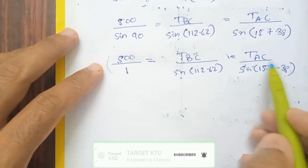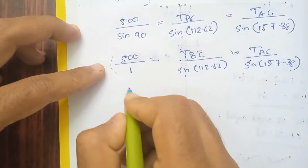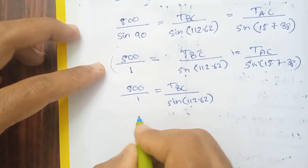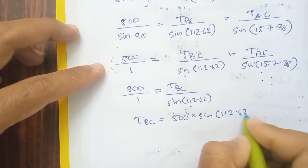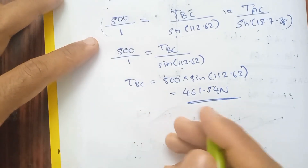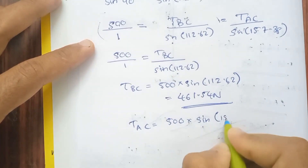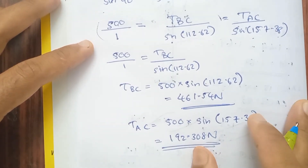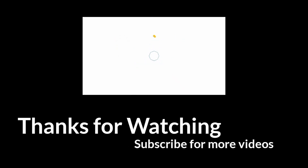TAC equals 500 times sin of 157.38, which gives 192.308 Newtons. TBC equals 500 times sin of 112.62, which gives 461.54 Newtons. Therefore TBC equals 461.54 N and TAC equals 192.308 N.